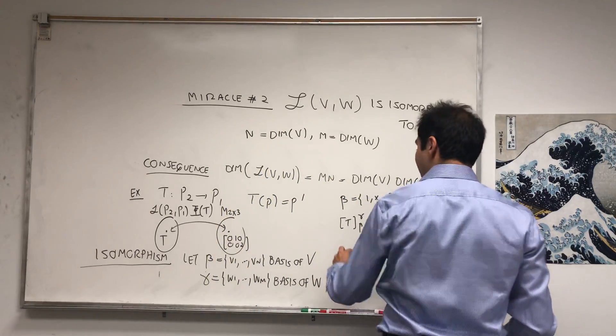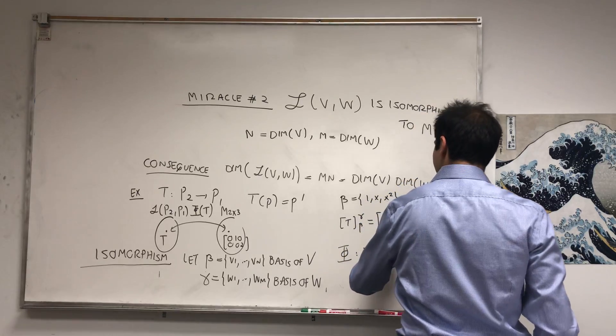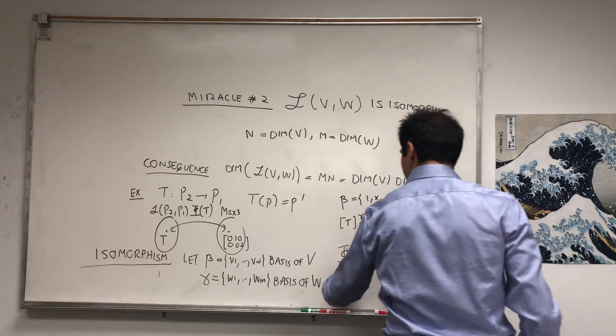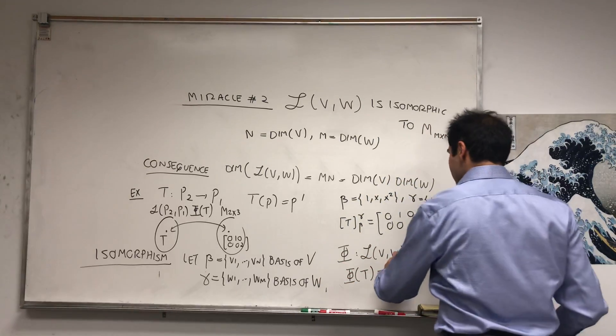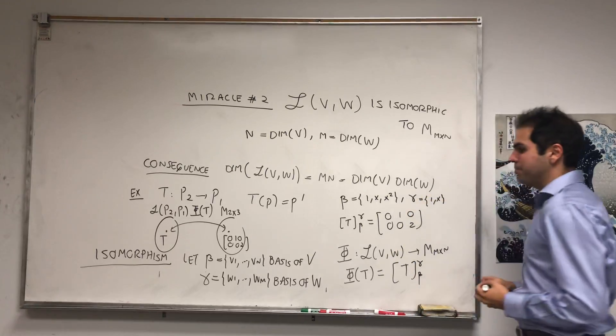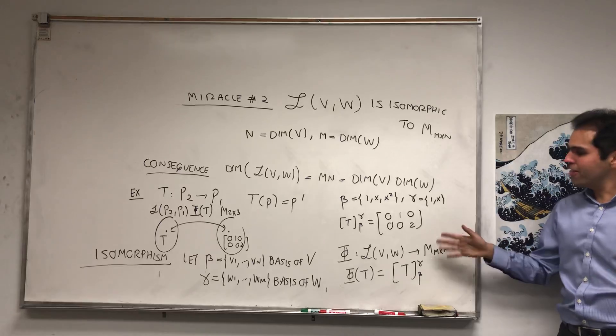And then you can just define Phi going from your linear transformations to matrices simply by Phi of T. Again, we fix the basis, so it's just the matrix of T from beta to gamma.